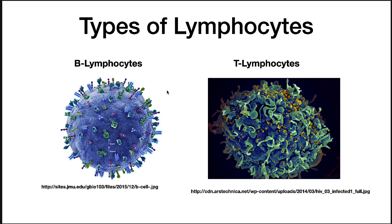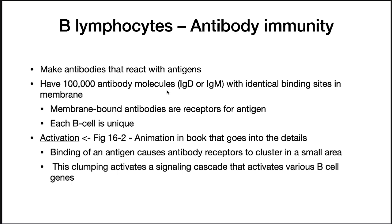The rest of this lecture we're going to talk about B cells, and the second lecture on adaptive immunity will cover T lymphocytes. B lymphocytes are involved in antibody immunity — they make antibodies that react with antigens. On their surface they will have 100,000 antibody molecules, either IgG or IgM, and they all have an identical binding site that recognizes a single antigen. The membrane-bound antibodies are receptors for the antigen, and each B cell is unique. You have literally millions of different B cells, and each one has a unique antibody on it.